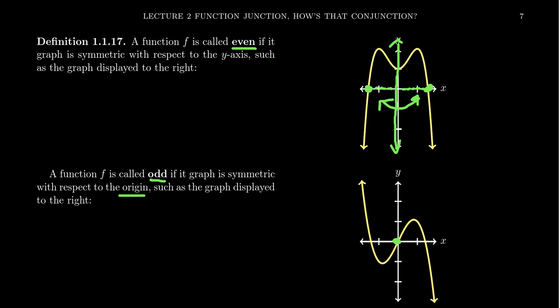For the time being, I just want you to know that a function is even if it's symmetric with respect to the y-axis. It's odd if it's symmetric with respect to the origin. And I want you to be able to visually identify these two types of symmetries when you look at the graph of a function.